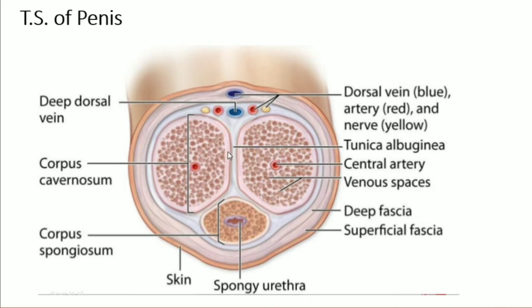The TS of the testes shows two types of tissue: corpus cavernosum — there are two bundles of corpus cavernosum. Inside, these are the muscular parts and centrally present is the central artery. The central artery supplies blood to the tissue. This blood fills the gaps and it becomes erectile due to the accumulation of blood inside the tissue.